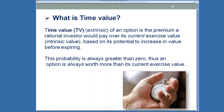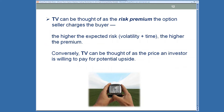An option is always worth more than its current exercise value. It's really the risk premium the option seller charges the buyer. As a buyer of an option, you're going to be willing to pay additional money because it gives you more time for your trade to work out. As a seller, you want money for that option because that's risk.